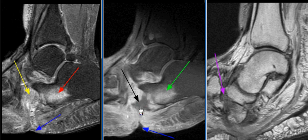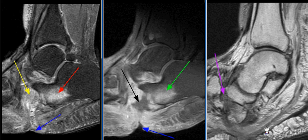There is peripheral enhancement seen on the post-contrast images with central non-enhancing tissue, consistent with an abscess. There is disorganization, osseous debris, and dislocation seen in the midfoot, consistent with advanced neuropathic arthropathy.